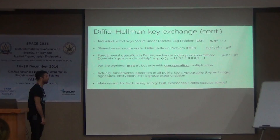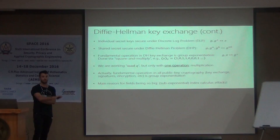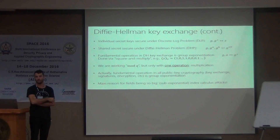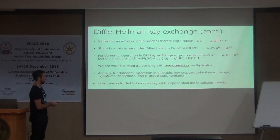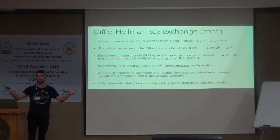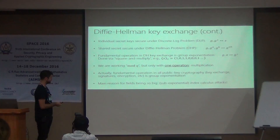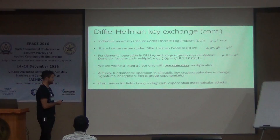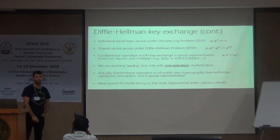Let's talk about what's going on under the covers here. There are two ways that you could attack this problem as an attacker who sees all the public data. The first way is you could try to recover either of their private keys. You could look at Diffie's public key G to the A and the generator, and try to recover A. If you do that, you can recover the shared secret because you have Hellman's public key as well. That's one way to break the scheme — solve the discrete logarithm problem: given G and G to the X, find X.